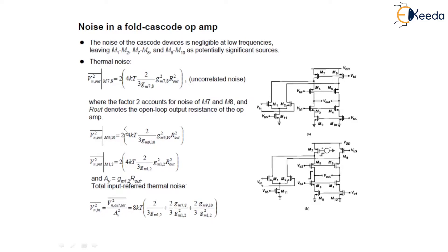The thermal noise of transistor M9-M10 is given as the same equation just changing the subscript 7-8 to 9-10, and similarly for transistor M1-2, changing the subscript to 1-2.